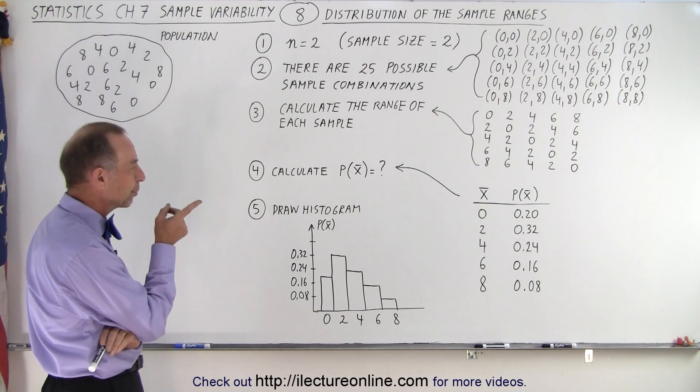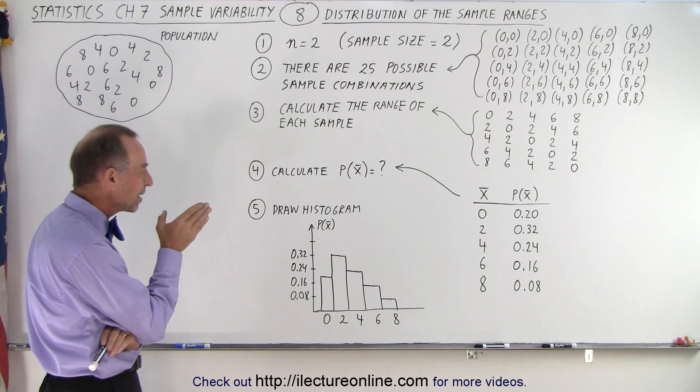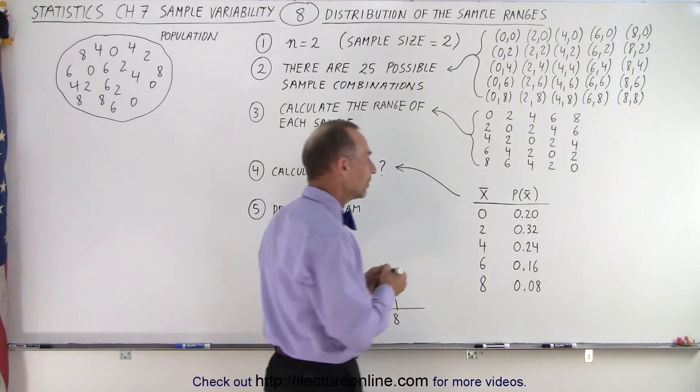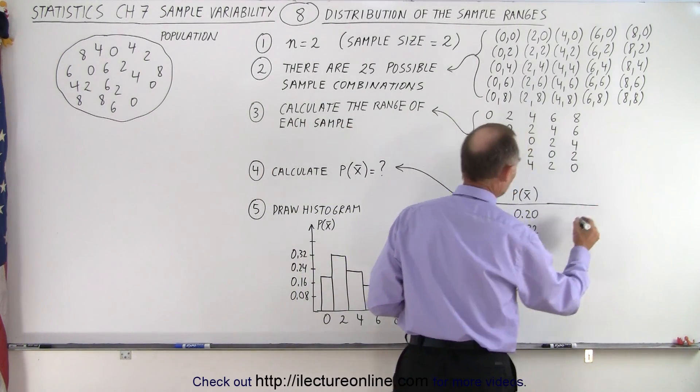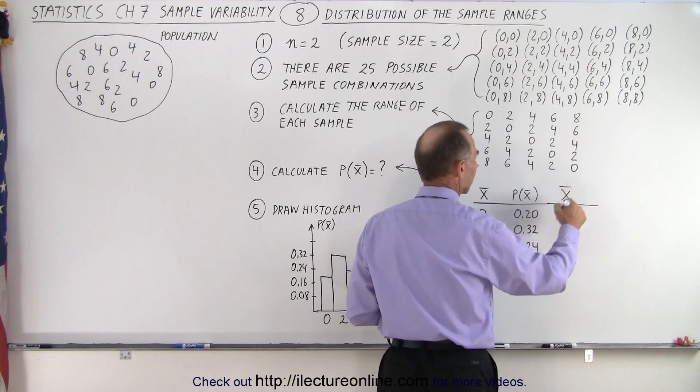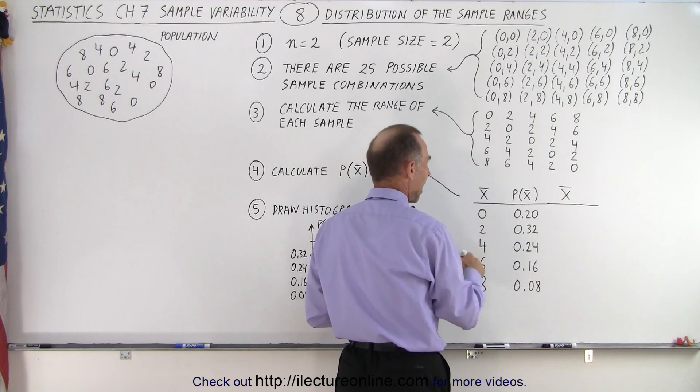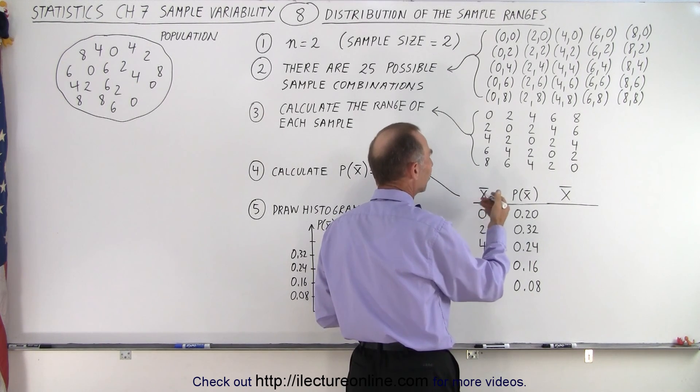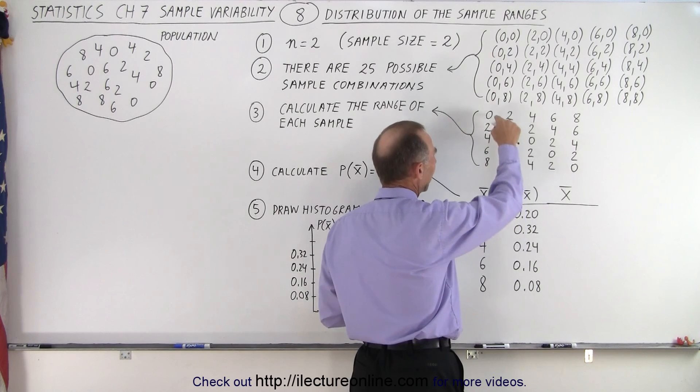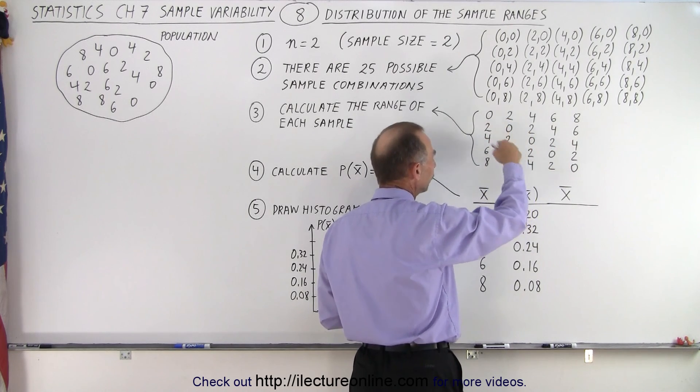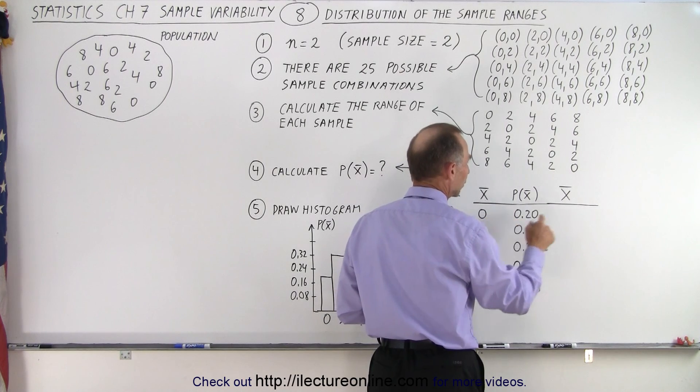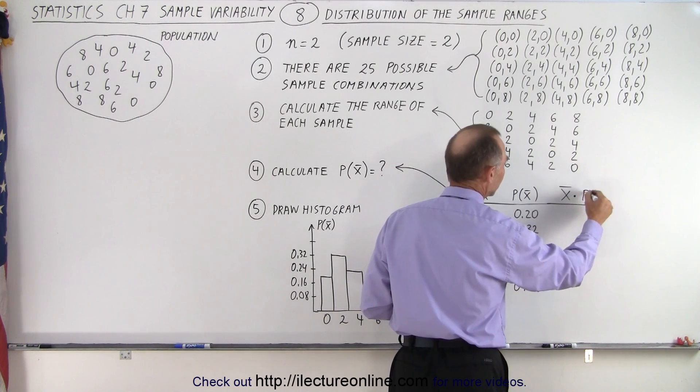Now what we probably should calculate is what is the mean or the average of all the ranges. And to find the mean, what we need to do is we need to multiply the average of each of the occurrences. So we have 0, 2, 4, 6, or 8, and the probability that that number will occur, so now we're going to multiply the two together.